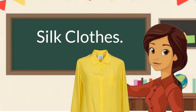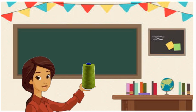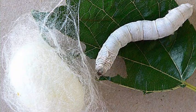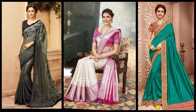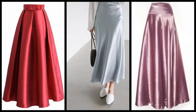Silk clothes are made from silk fibers. We get silk fibers from insects like the silkworm. With silk they make saris — this is the silk sari. This is the silk skirt.